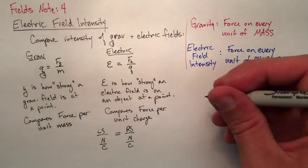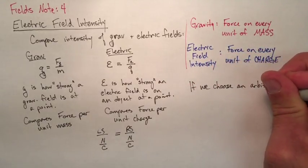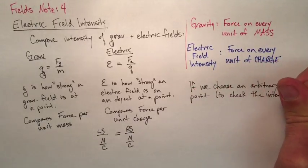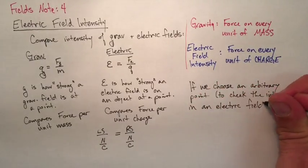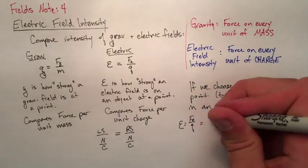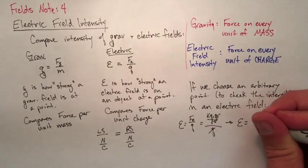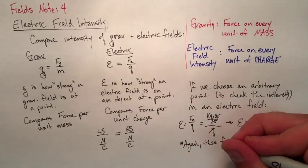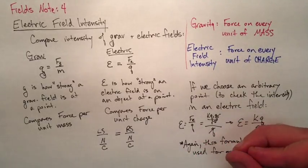Now, similar to voltage, we don't need to have two objects in a field to figure out what force is being felt or how much gravitational potential energy. We can choose an arbitrary point, some point x, to check the intensity of an electric field. So using this new equation, where eta is f over q, we know force in electric field is Coulomb's law. So when we put that in and simplify it, we get eta equals kq over r squared. So this is how we can find an electric field intensity at some arbitrary point in an electric field.